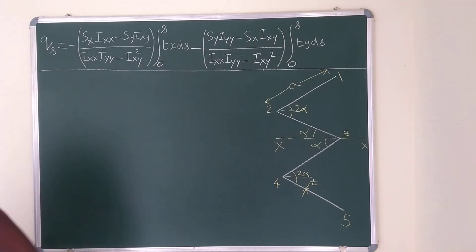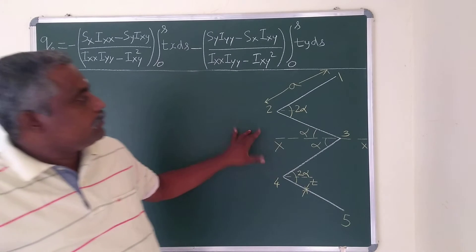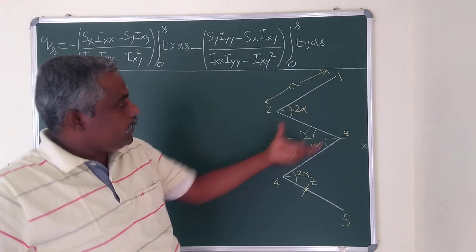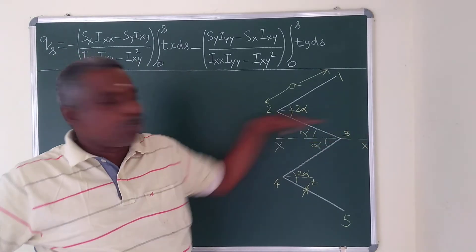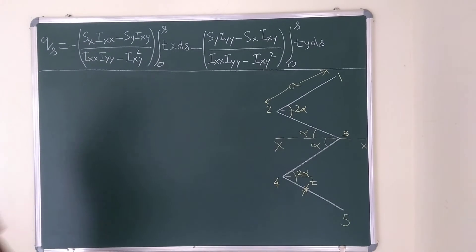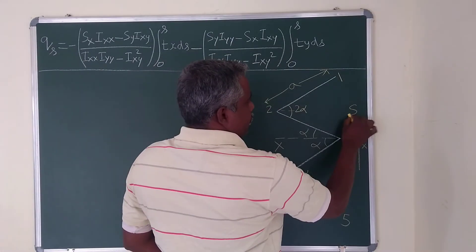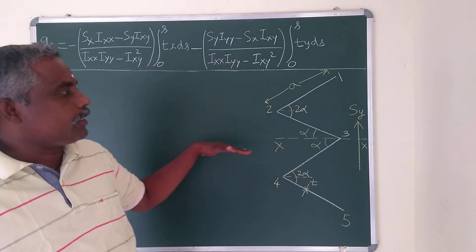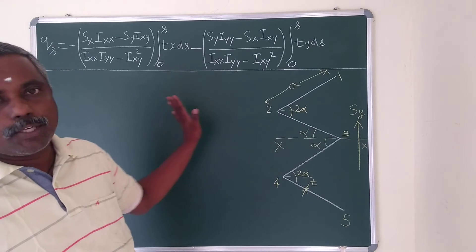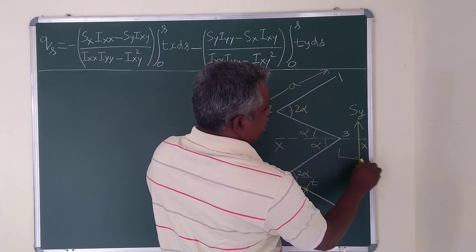For the given singular symmetrical thin-wall open section, we have to locate the shear center. Each wall has the same length a, thickness is constant, and the section is symmetric about the x-axis. Since the section is symmetric about the x-axis, we assume the shear force as Sy, and Sx is 0 because the shear center lies along the axis of symmetry.